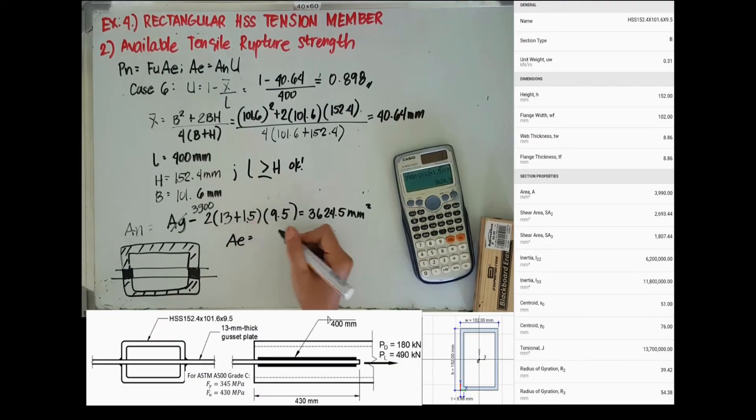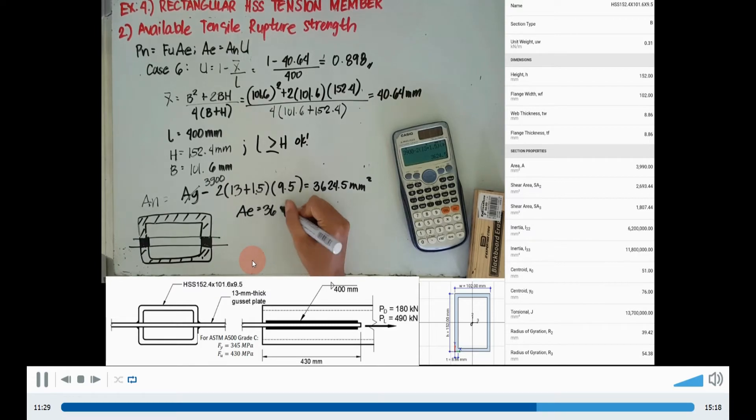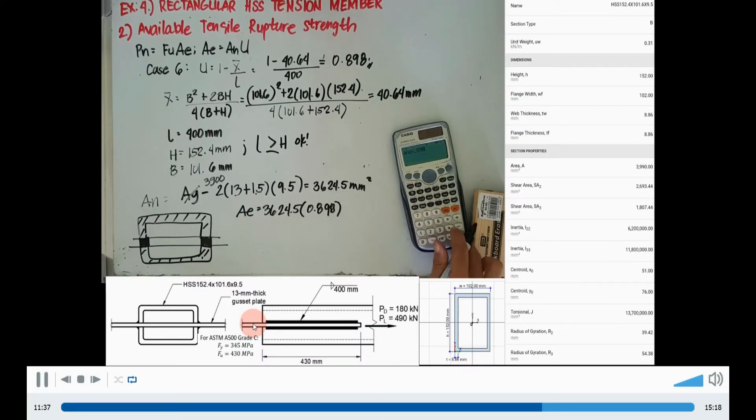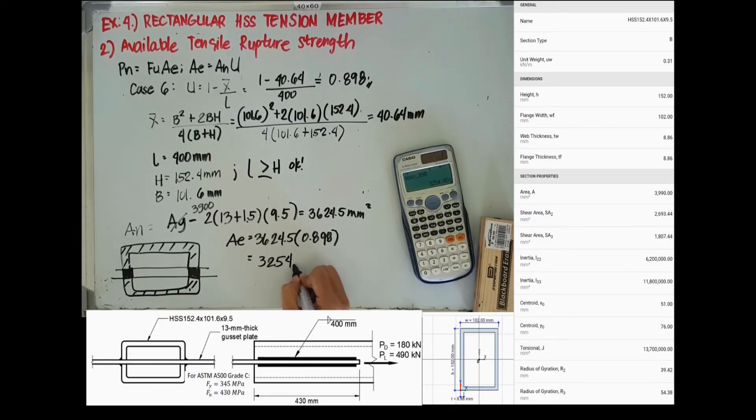Our effective net area is equal to the net area multiplied by the shear lag factor, which will be now equal to 3,254.8 square millimeter.